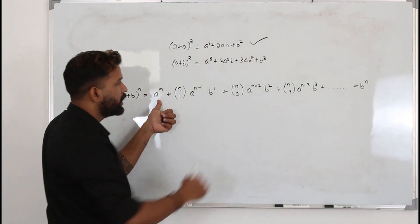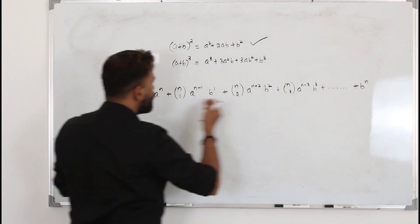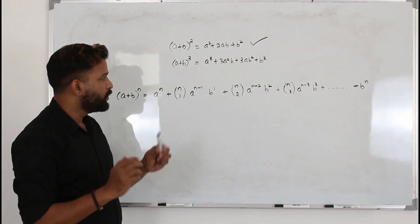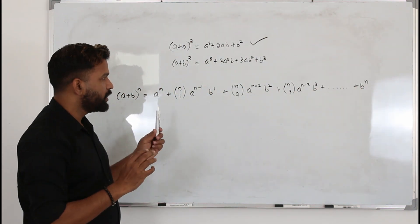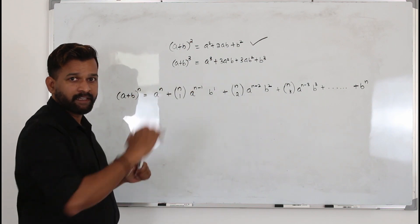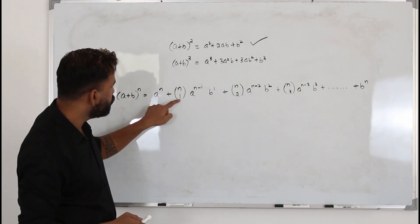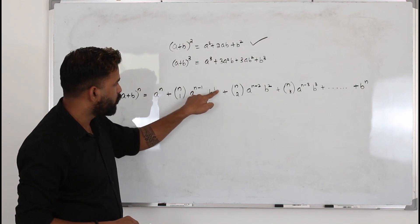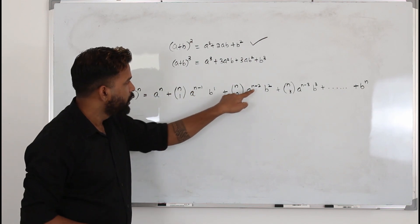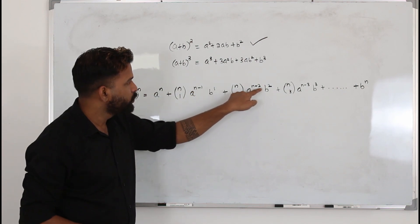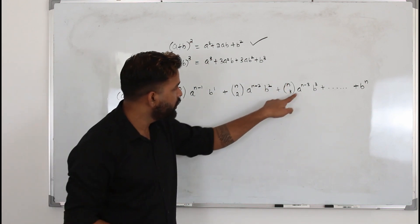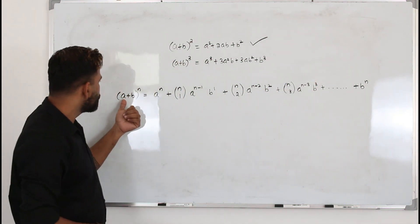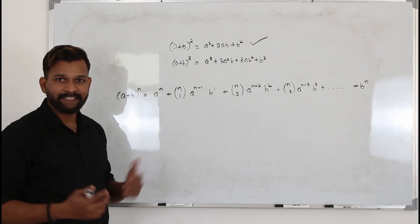If you watch closely, you can see a pattern. When you have nC1, the power of a is n−1 and power of b is 1. For nC2, power of a is n−2 and b is 2. For nC3, power of a is n−3 and b is 3. So a is the first term and b is the second term.